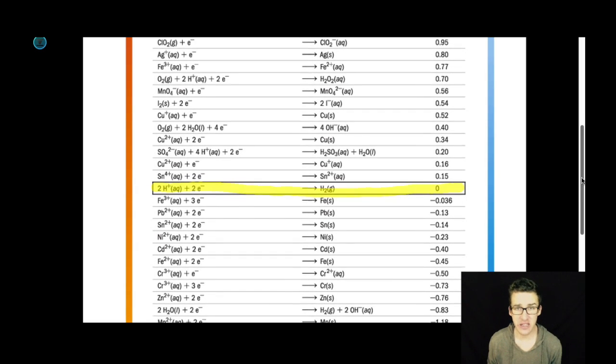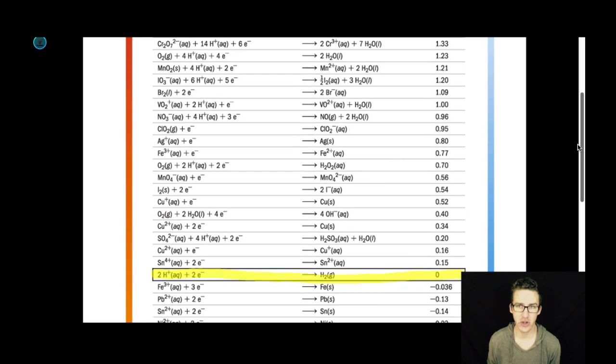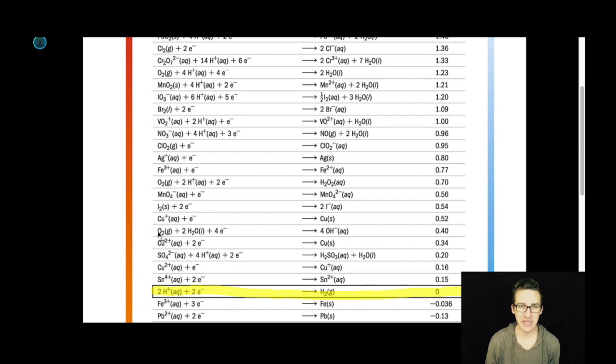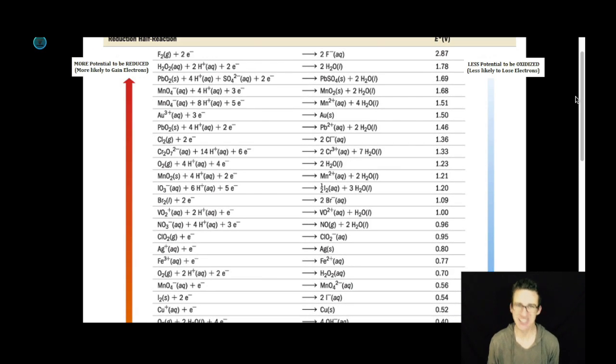So as you carefully study your reduction potential chart, notice that all of these things above hydrogen are more likely to be reduced. The reduction potential, so much potential in life, the reduction potential gets larger. So these things like fluorine, hydrogen peroxide are things that are going to be really likely to gain electrons. They're going to be really likely to be reduced. They have really high reduction potentials.